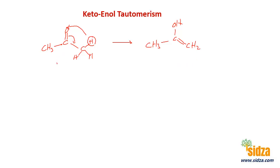This is the keto form because you have a C=O group here, and this will be called the enolic form. This is an enol — when you have a carbon-carbon double bond and on the same carbon you also have an OH group. This is the enol form. This hydrogen can then go back to its original position and the double bond shifts back.